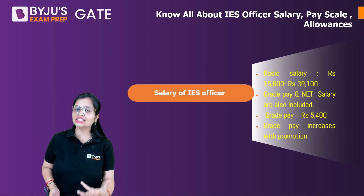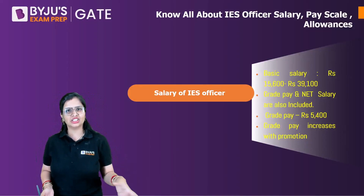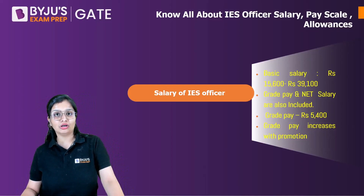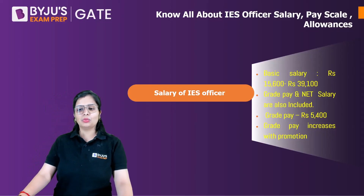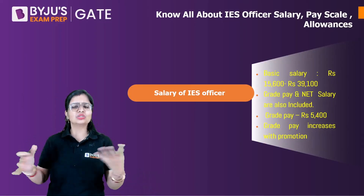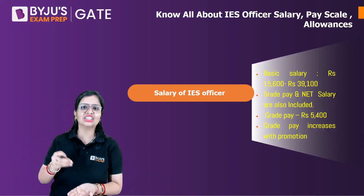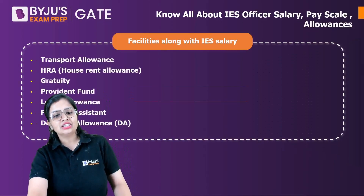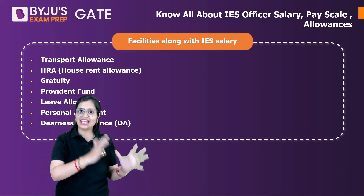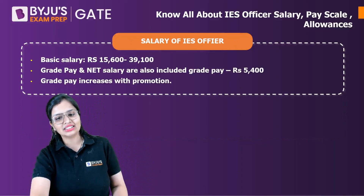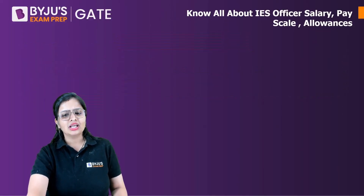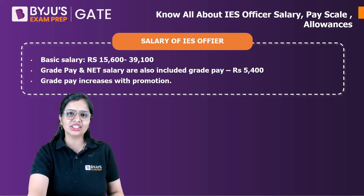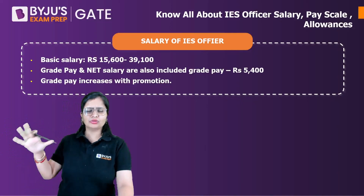Let me tell you one thing here: promotion is quick and faster compared to your state level. When you become an assistant engineer in a state job, it takes years for promotion, but this is not the case when you talk about central government jobs, and specifically when you talk about an IES officer profile. Cash in hand is approximately ₹55,000. Your cash in hand includes basic salary, grade pay, and everything put together — so round about ₹55,000 will be your cash in hand.